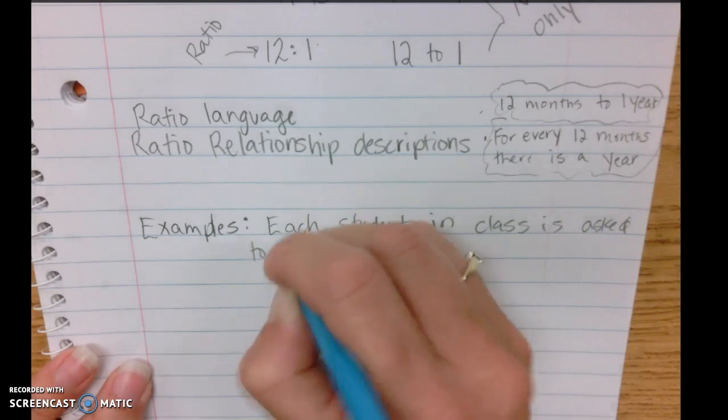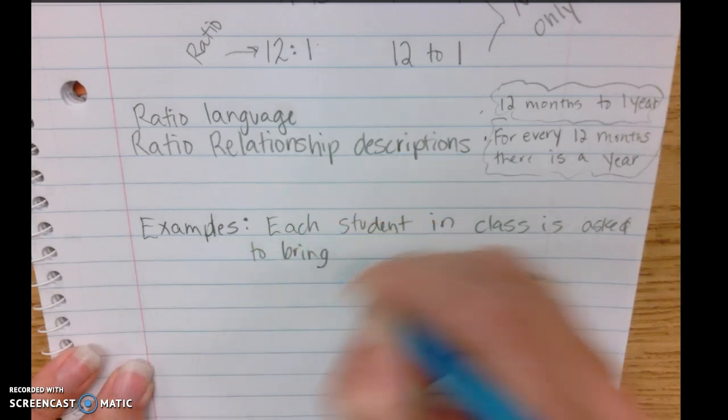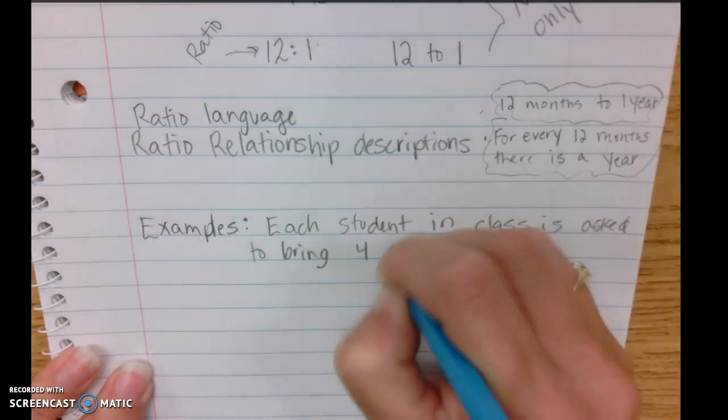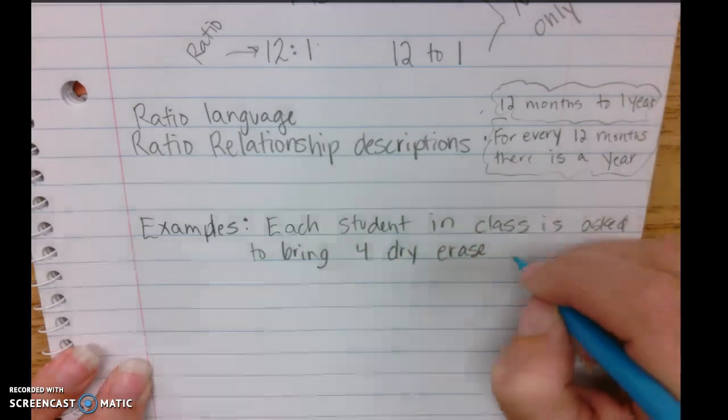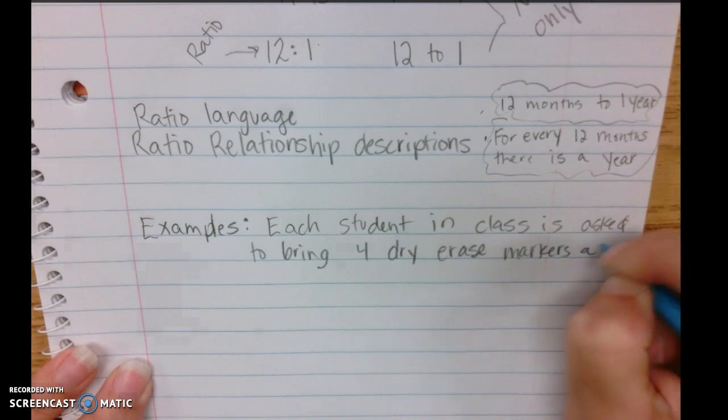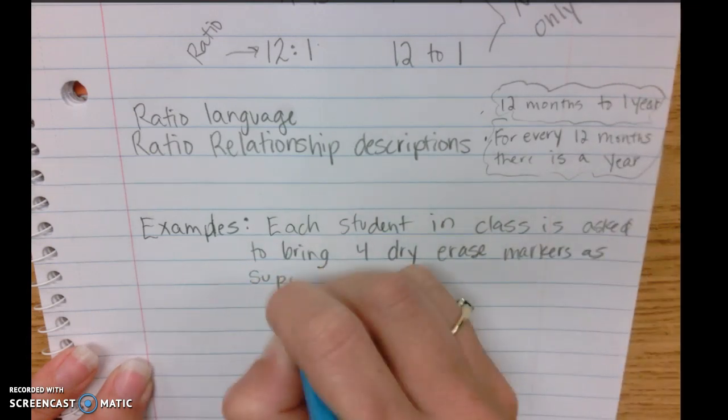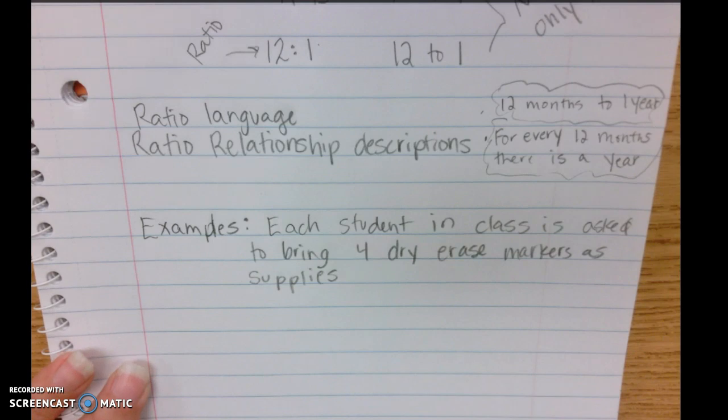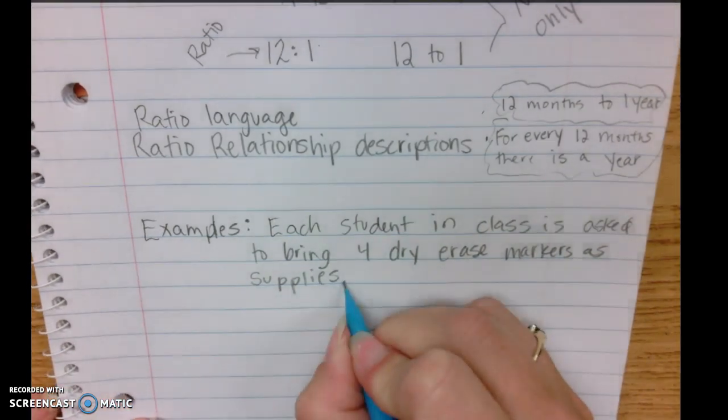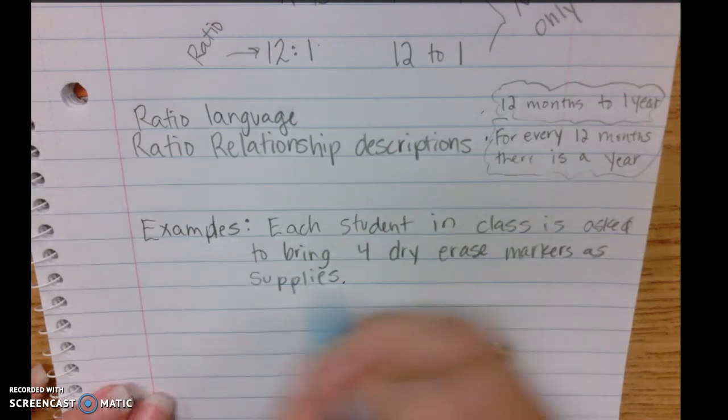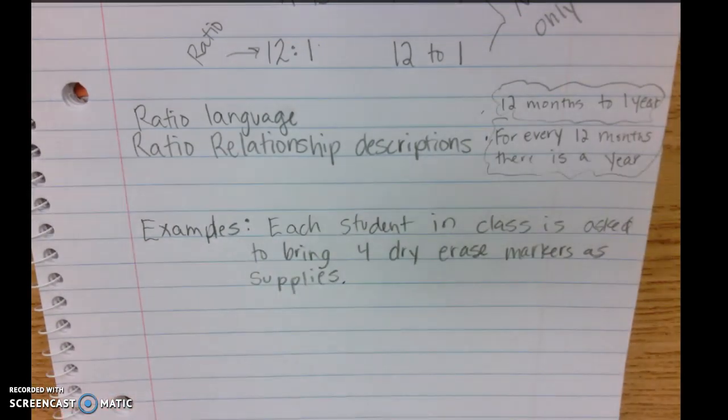Each student is asked to bring four dry erase markers as supplies. So if the question said write a ratio that represents this situation, you could either write, or that represents the situation of students to dry erase markers.